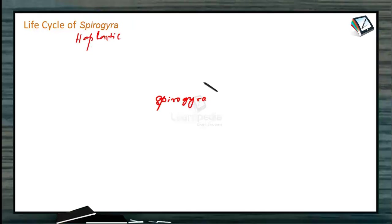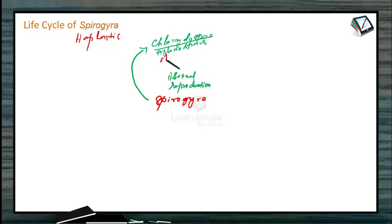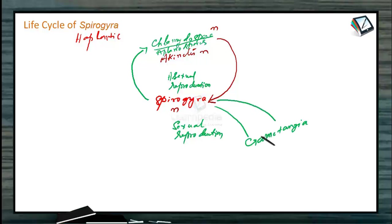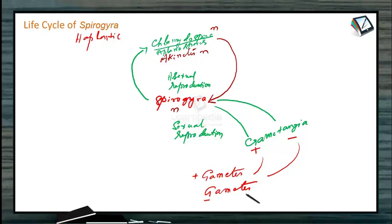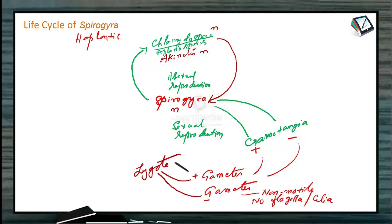The life cycle of Spirogyra is haplontic. In asexual reproduction, Spirogyra produces chlamydospores — otherwise called aplanospores — and echinates. Spirogyra is haploid; these spores are also haploid and give rise again to Spirogyra. In sexual reproduction, Spirogyra produces gametangia — plus and minus — which produce gametes that are plus and minus. These gametes are non-motile, meaning no flagella or cilia. The gametes fuse and a diploid zygote is produced. The movement of these gametes is amoeboid. The zygote may be found in one cell or in the conjugation tube, and undergoes a period of rest — the zygospore stage — forming a thick wall so that it is resistant under unfavorable conditions.